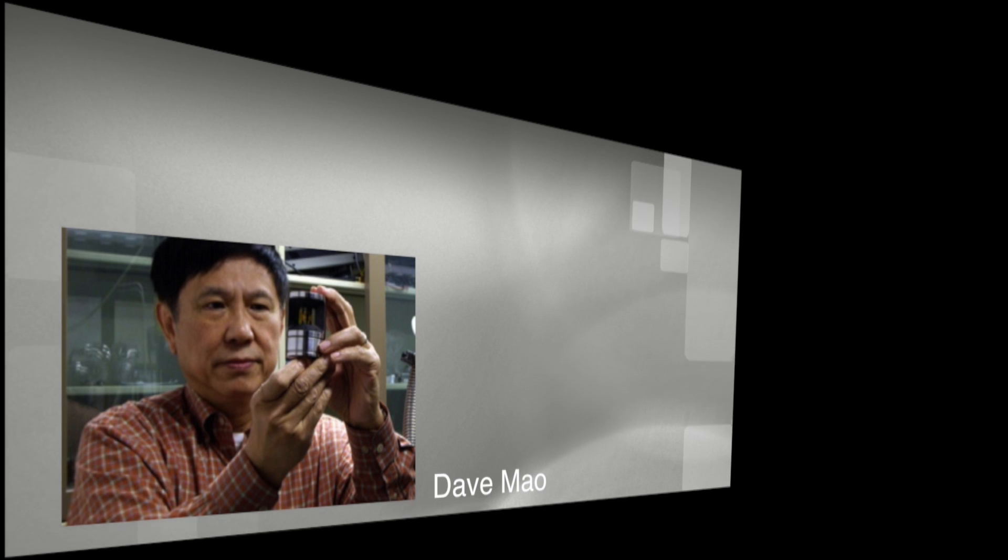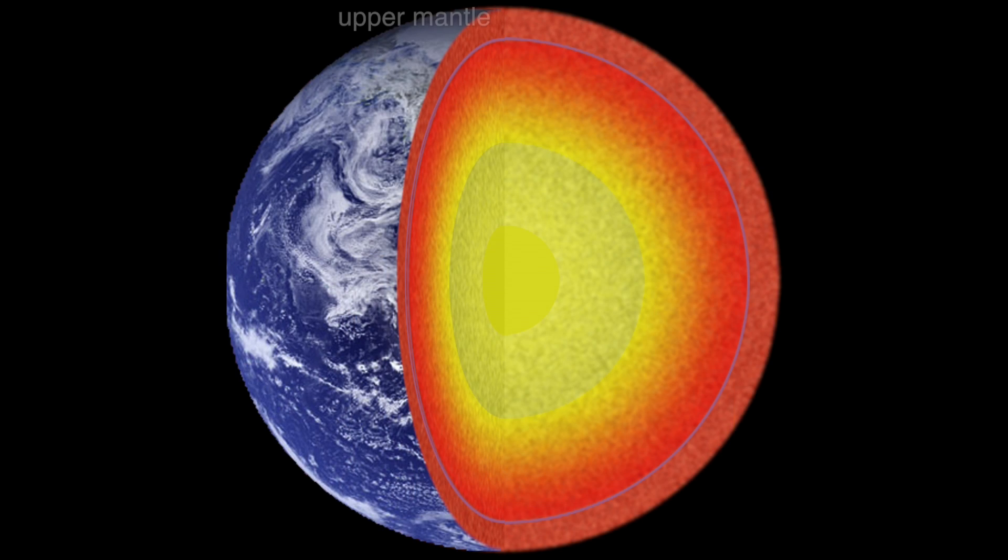Breaking research news from a team of scientists led by Carnegie State Mao reveals that the composition of the Earth's lower mantle may be significantly different than previously thought.